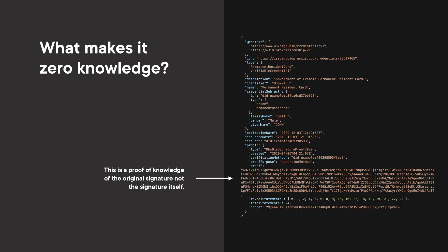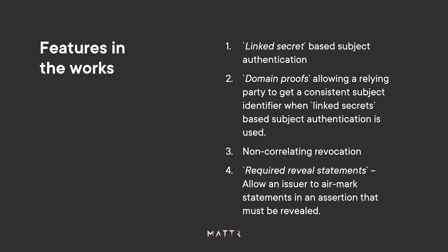Another feature we've been working on is domain proofs. When you have a linked secret and no single identifier for the subject, how does a verifier know they haven't seen that credential before or that they're not being proxied or spoofed? We believe we have a technique called a domain proof where we can generate a proof proving linked secret consistency over time — inspired by work from Lavish and Daniel Hardman, documented in the Credential Threat Model paper submitted at RWoT. We're also working on non-correlating revocation and required revealed statements, where an issuer earmarks statements in the original proof — such as expiry — that must always be present in any derived proof.